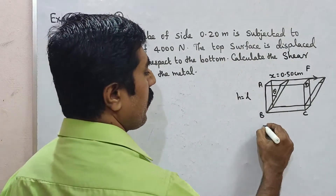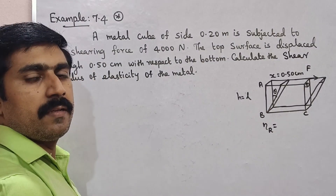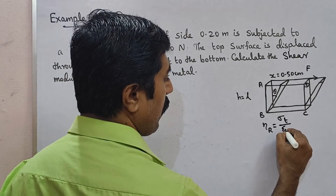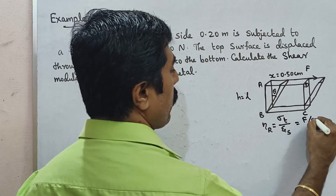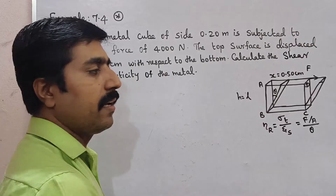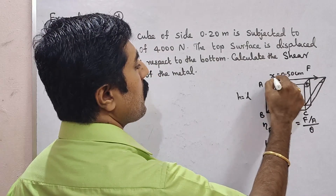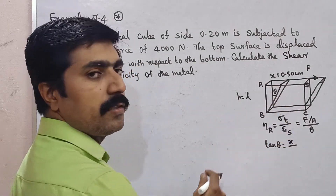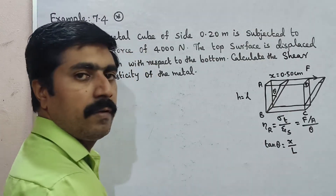The shear modulus eta-r is equal to shearing stress divided by shearing strain. Shearing stress is the tangential stress, and shearing strain is the angle psi. For the shearing angle theta, tan theta equals opposite side x divided by adjacent side L.